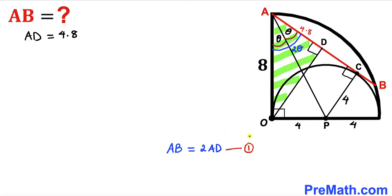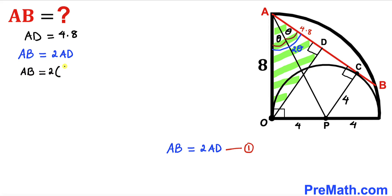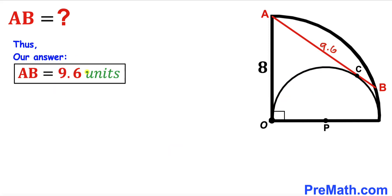Recalling equation 1: chord AB = 2 × AD. Substituting AD = 4.8, our chord AB length turns out to be 2 × 4.8 = 9.6 units. Thanks for watching and please don't forget to subscribe to my channel for more exciting videos!